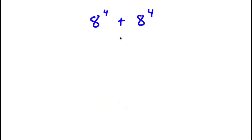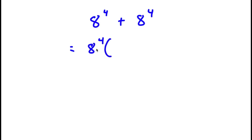In this problem I have 8 to the power of 4 plus 8 to the power of 4. To solve this, I'm going to start by factoring out 8 to the power of 4. So I have 8 to the power of 4 times — well, 8 to the power of 4 divided by 8 to the power of 4 is 1, so I have 8 to the power of 4 times 1 plus 1.